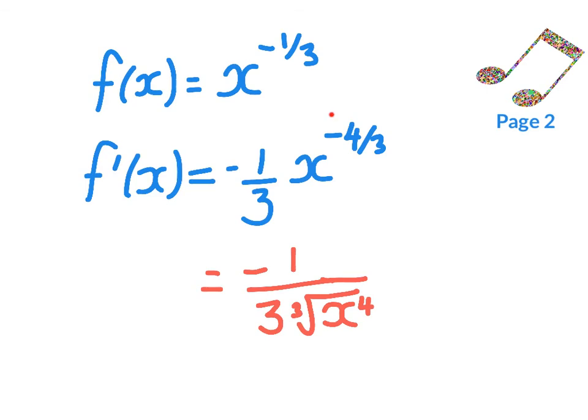So the negative meant that I brought the x underneath the fraction. The 4 was the power, the 3 was the order of the root.